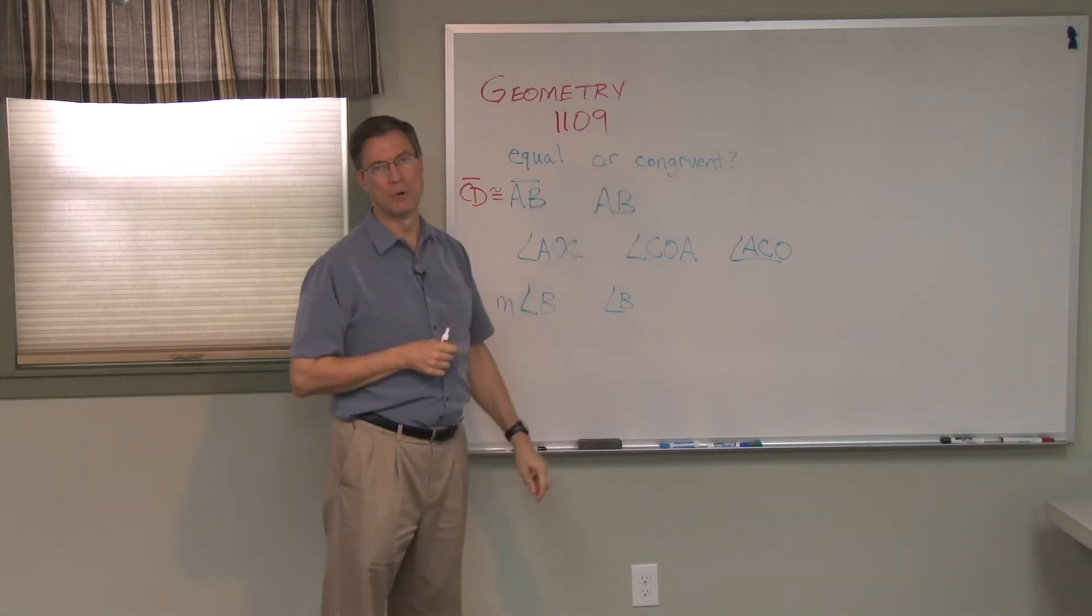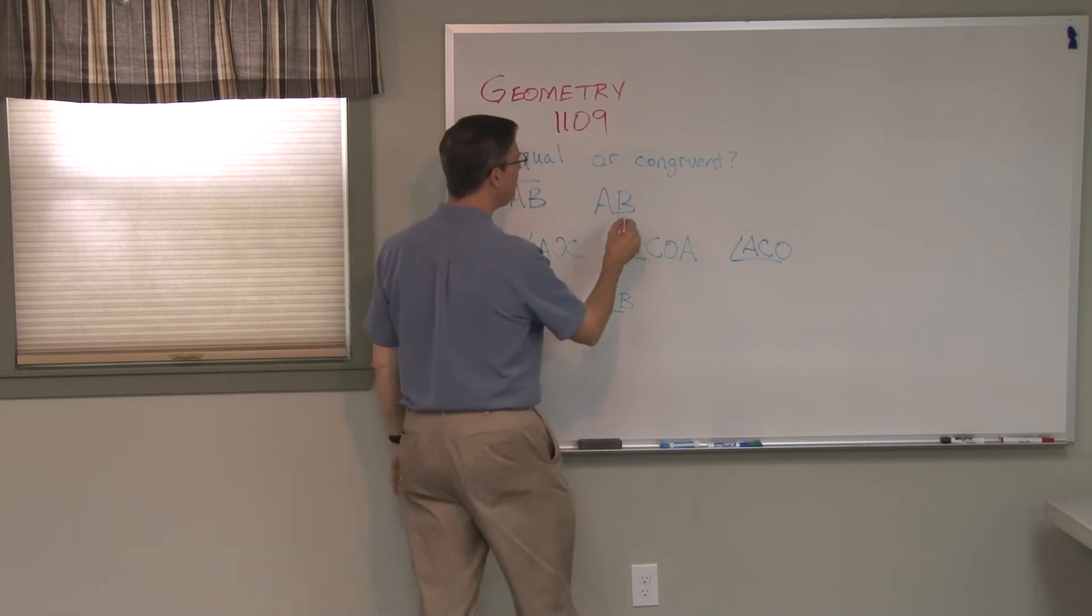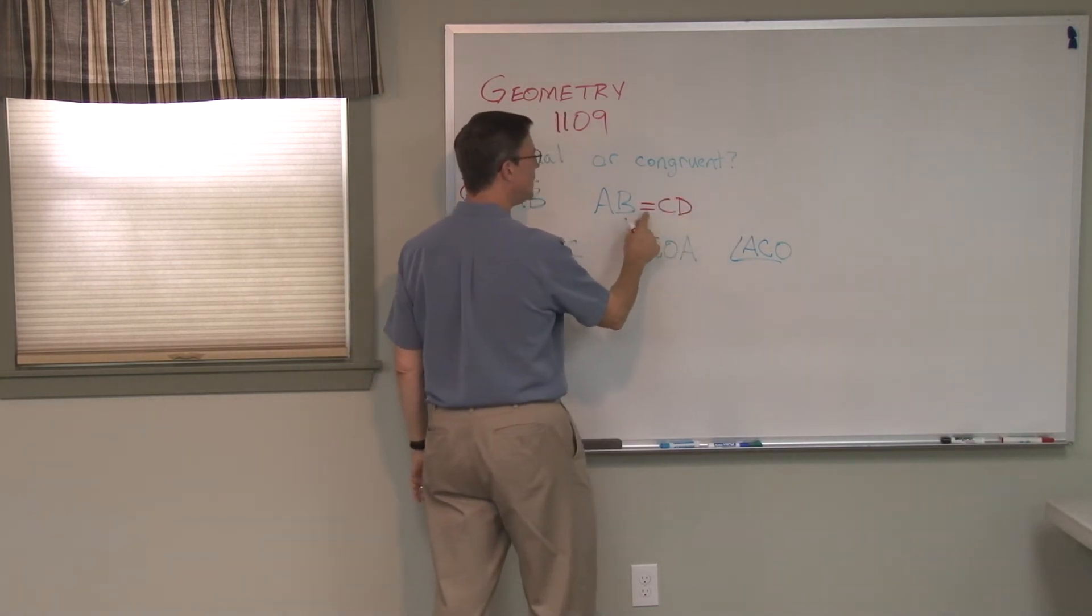If we're talking about the actual length, the number that represents the length of the line segment, then we would use AB without the bar on the top. Seems like a subtle difference and you might miss it at first.